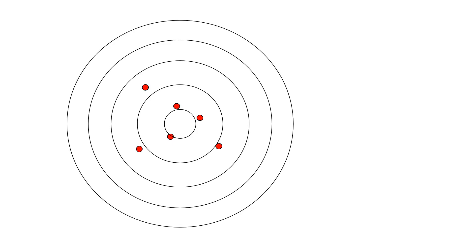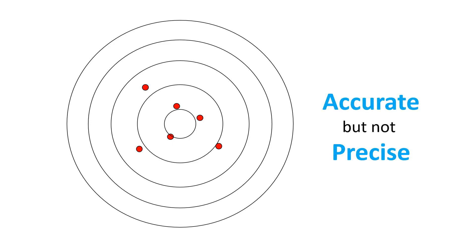On another day, my shooting is all over the place — the bullets haven't landed in the same spot. But I could argue I was accurate, because the center of all those shots is pretty close to the bullseye. So I would say my shooting is accurate but not precise. What could cause that? Maybe I was tired or nervous and shaking, and my technique was bad. That's good accuracy but poor precision.